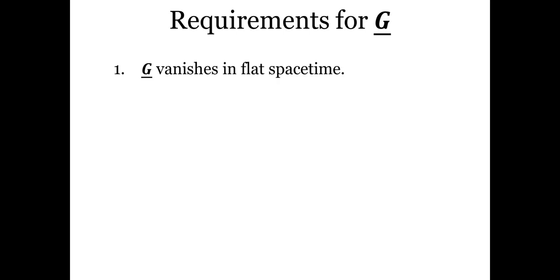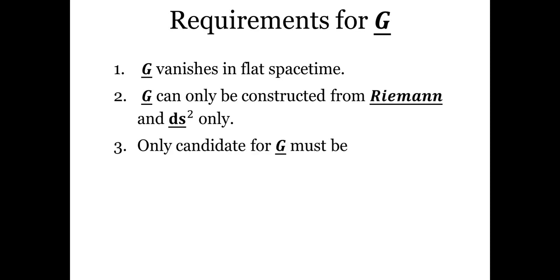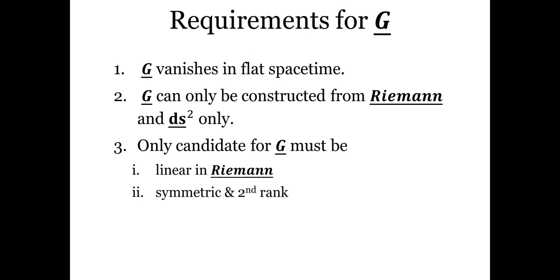Let us list the requirements for the Einstein tensor. First, G vanishes in flat spacetime — not just the divergence of G, but G itself must vanish for a flat spacetime, because flat spacetime is by definition not curved. Second, G can only be constructed from geometry — determined by the curvature tensor and the metric tensor, and nothing else. The candidates for G must be linear in the Riemann curvature tensor, symmetric and second rank, and must have, as a consequence of the field equation, a vanishing divergence.